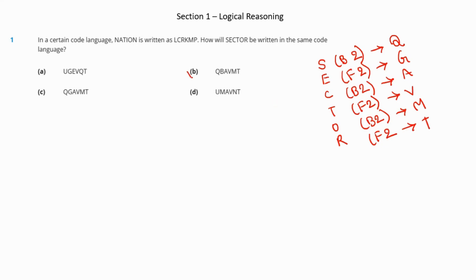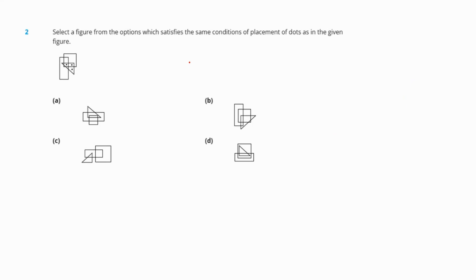Question two: Select the figure from the options which will satisfy the same condition of placement of dots as in the given figure. The correct one where the placement of dots will be correct is option B.